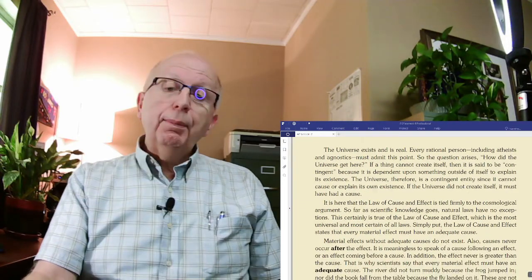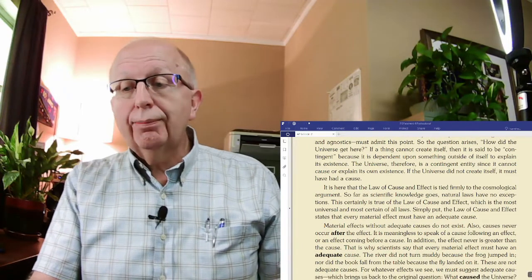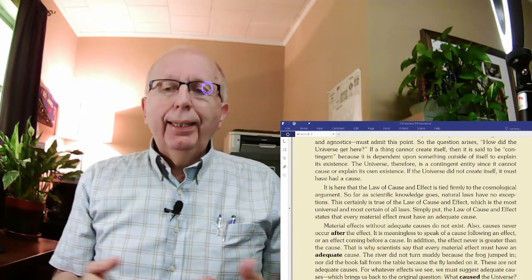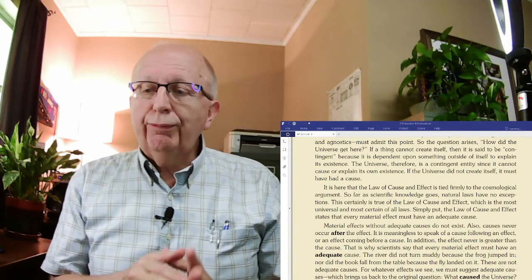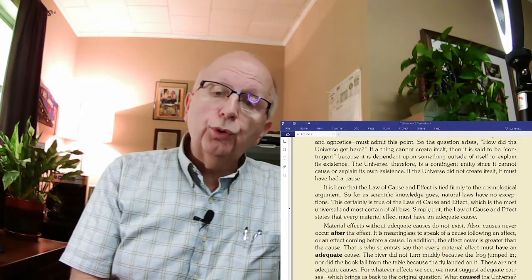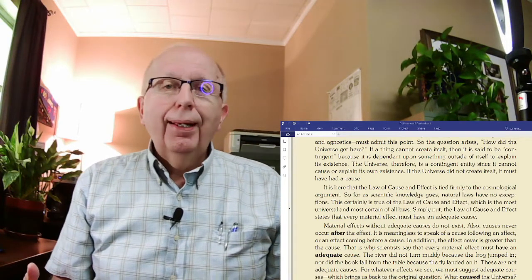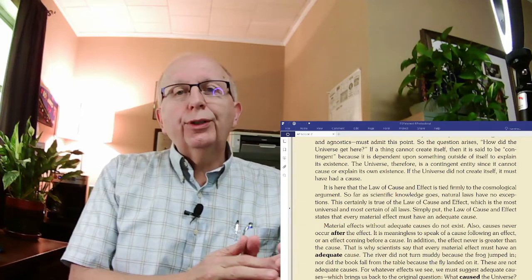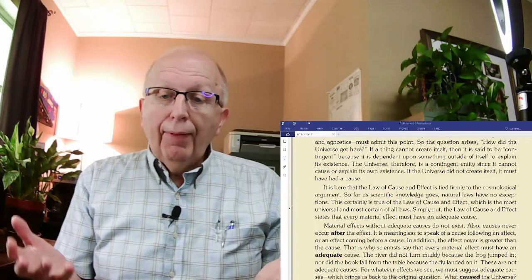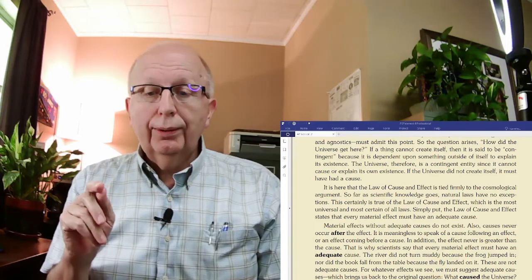The universe, therefore, is a contingent entity, since it cannot cause or explain its own existence. If the universe cannot create itself, it must have had a cause. It is here that the law of cause and effect is tied firmly to the cosmological argument. So far as scientific evidence goes, natural laws have no exceptions. This is certainly true of the law of cause and effect, which is the most universal and most certain of all laws. Simply put, the law of cause and effect states that every material effect must have an adequate cause.